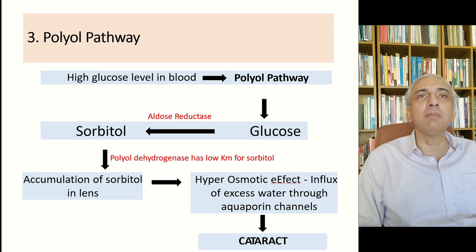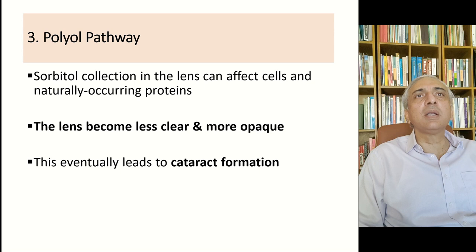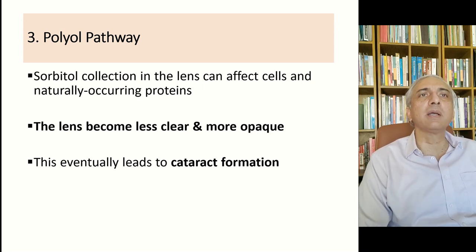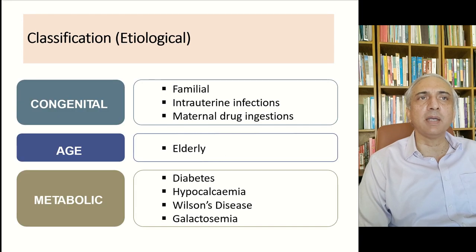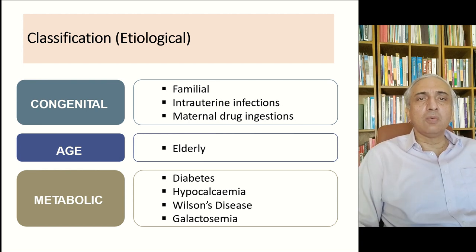Accumulation of sorbitol in the lens leads to a hyperosmotic effect, with efflux of excess water through aquaporin channels and formation of cataract. Sorbitol accumulation affects cells and naturally occurring proteins, the lens becomes less clear and more opaque, eventually leading to cataract formation.